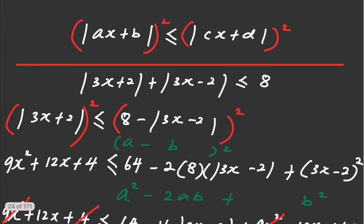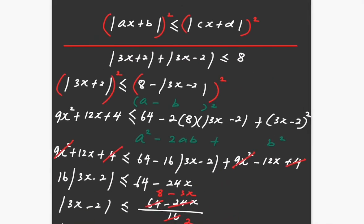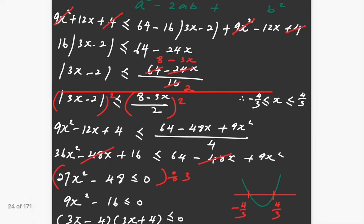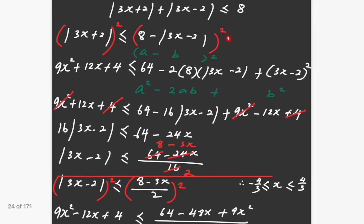You can check your answer by taking a number in between −4/3 and 4/3, say 0, and substituting it back into the original equation. If whatever you get on the left hand side is smaller than or equal to 8, then the answer is valid. If not, you have to reject the answer. This completes the first method — squaring both sides twice. Now I will show you a much simpler method called the plus-minus method.